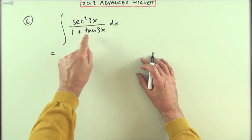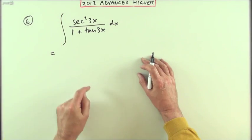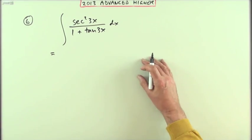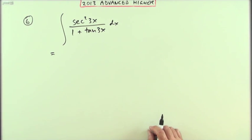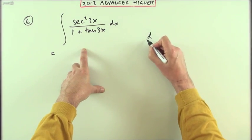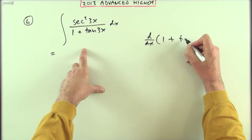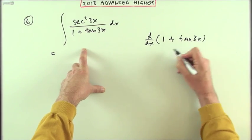So the pattern is, of course, this is a standard integral. If the numerator is a simple multiple of the derivative of the denominator, you've got a log. I'll just demonstrate that at the side. The derivative of the denominator 1 plus tan 3x would be differentiate tan.